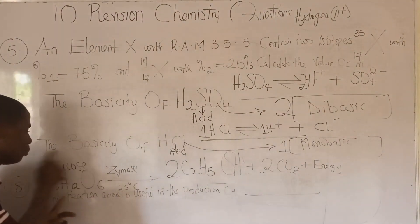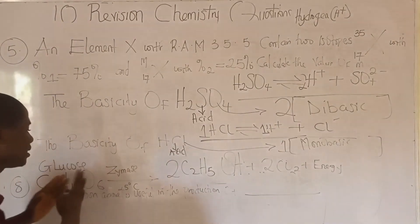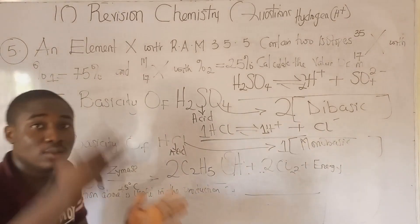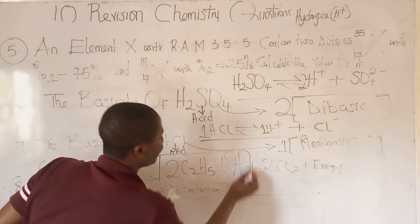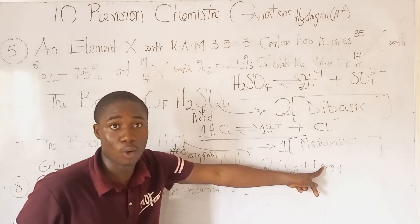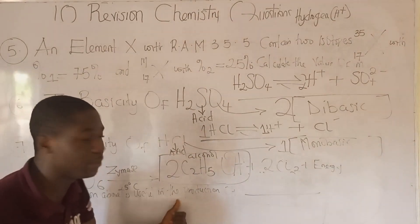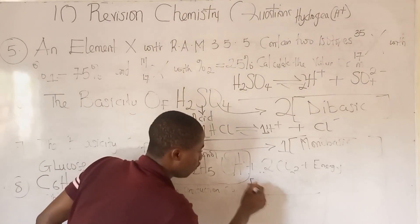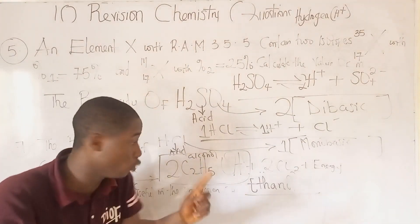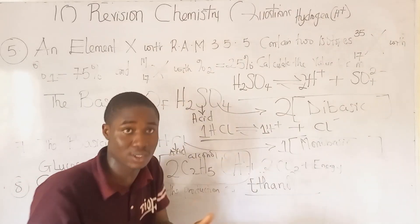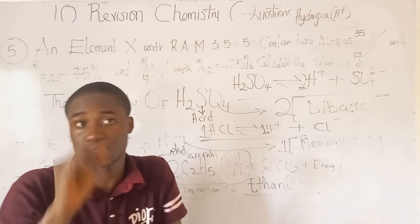Moving to the next practice question — it has to do with the breakdown of glucose (C₆H₁₂O₆). This explains a fermentation process whereby glucose, a large molecule, is broken down in the presence of an enzyme called zymase at a temperature of about 25°C to give ethanol plus CO₂ plus energy in the form of ATP. The question asks what the reaction is useful in producing — the answer is ethanol. I already have video lessons on organic chemistry; I'll put the links in the description.